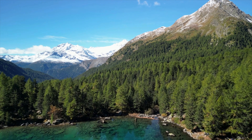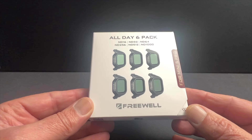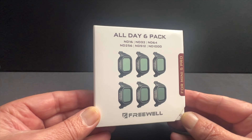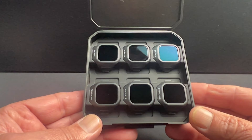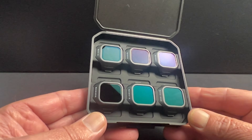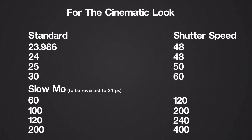The All-Day Pack ND filters range from ND16 right up to ND1000, giving you extremes from slightly sunny to extremely bright days. When would you use them? On sunny bright days, when there's too much light for the camera — beaches, snow, wide open landscapes — and when you want full control over exposure and to follow the 180-degree shutter rule, with shutter speed being double your frame rate for cinematic motion blur.